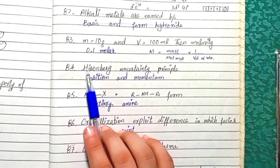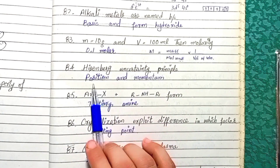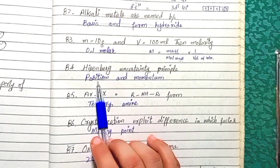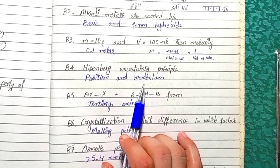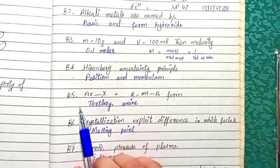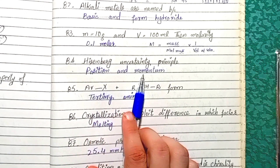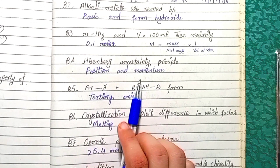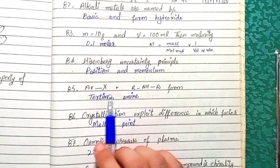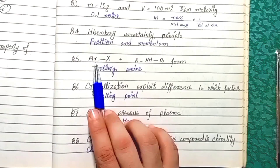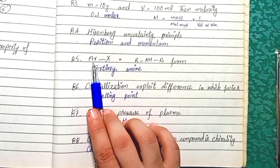Question 84: According to Heisenberg's uncertainty principle, we cannot simultaneously determine the position and momentum, or position and velocity, of an electron.